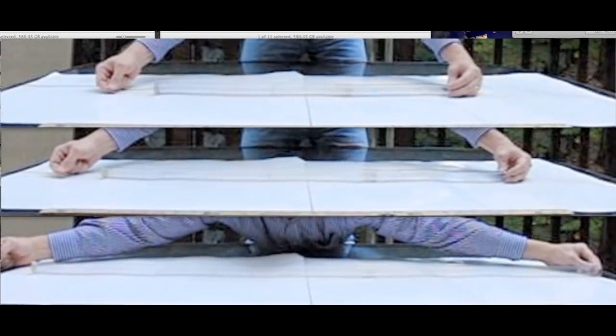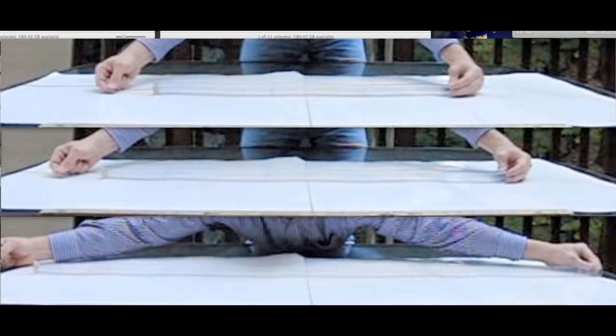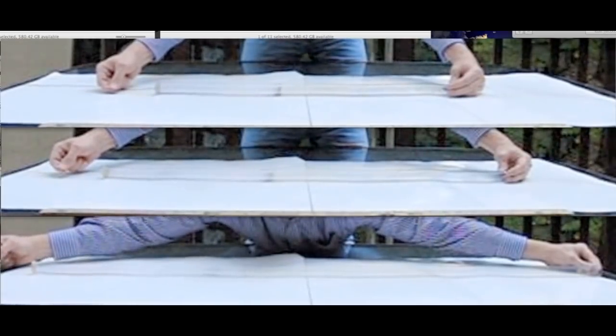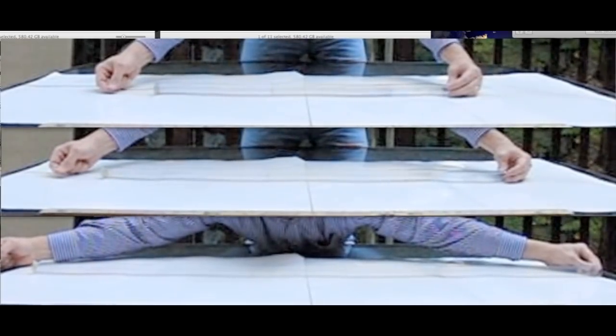Stretching the slinky increases the stiffness, but decreases the mass density such that the wave's speed is linearly proportional to the stretched length.